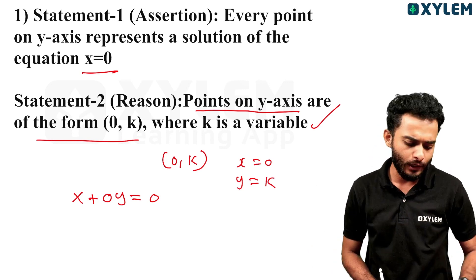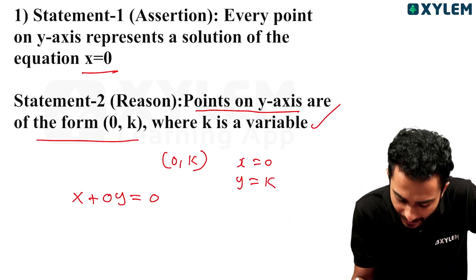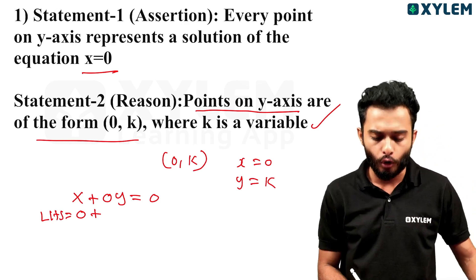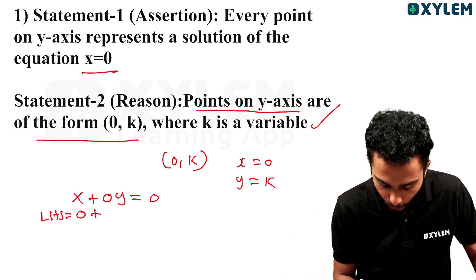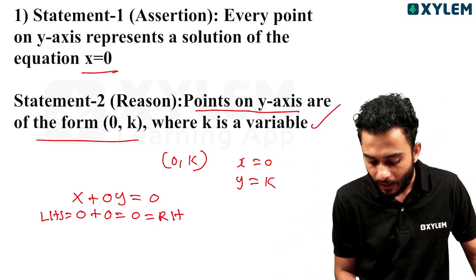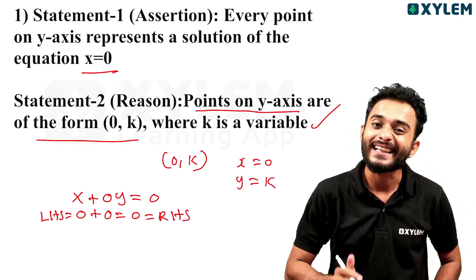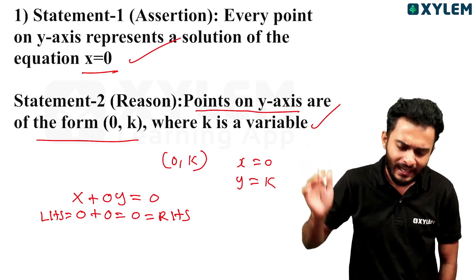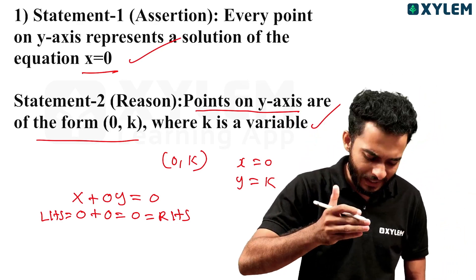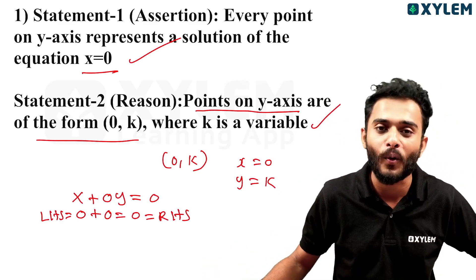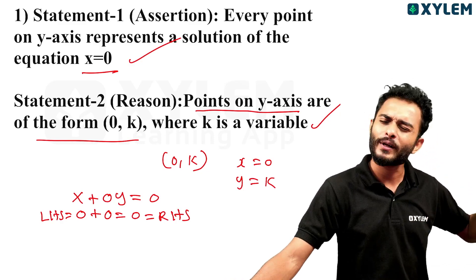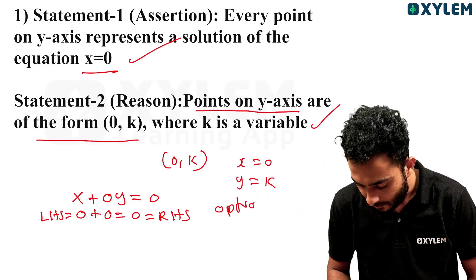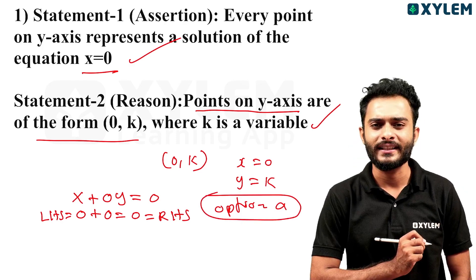That is, y is equal to k and x is equal to 0, y is equal to k. So it is equal to that — clear? One question we will learn.